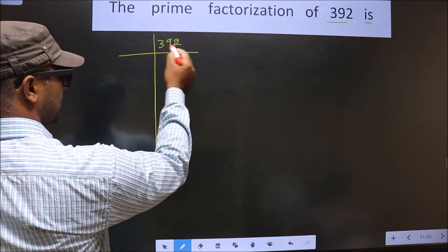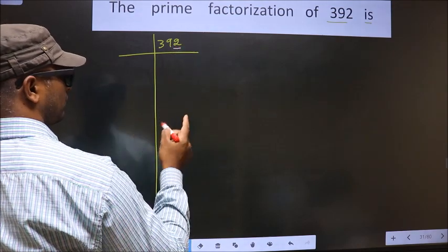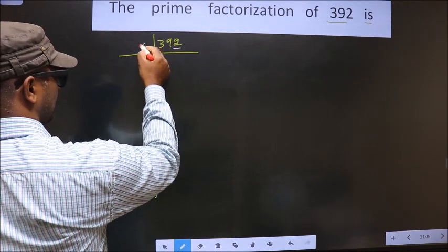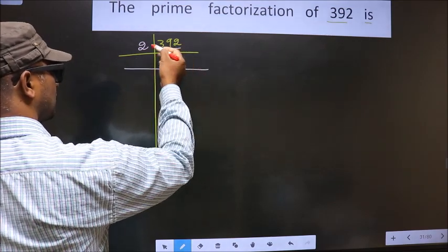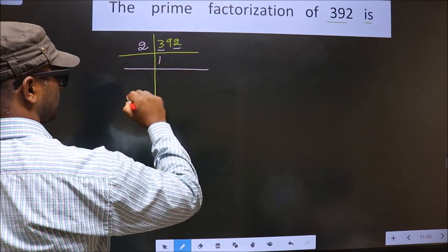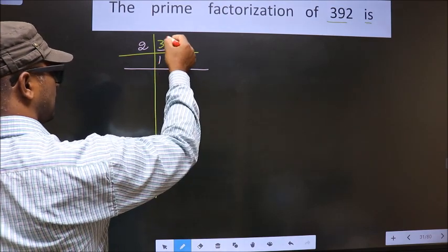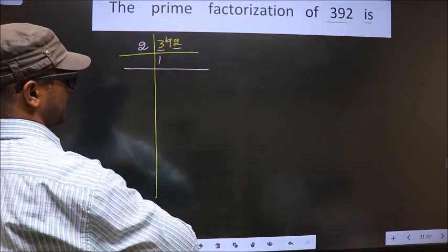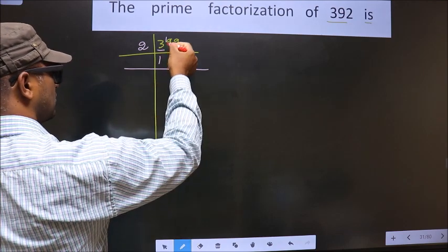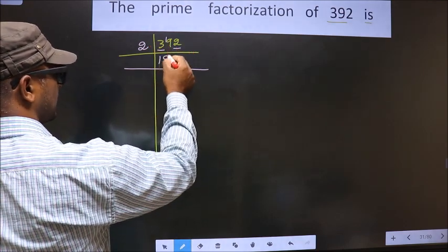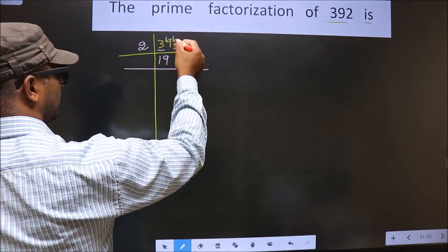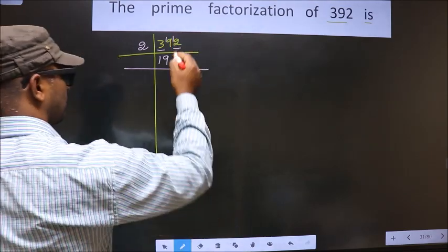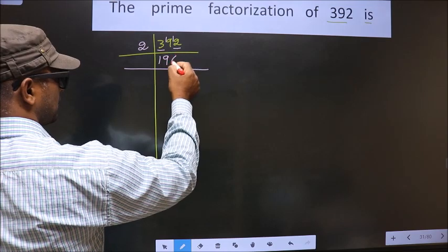For this number, the last digit is 2, which is even. So we take 2 here. First number is 3. A number close to 3 in the 2 table is 2 1s 2. 3 minus 2 is 1, 1 carried forward making it 19. A number close to 19 in the 2 table is 2 9s 18. 19 minus 18 is 1, 1 carried forward making it 12. When do we get 12 in the 2 table? 2 6s 12.